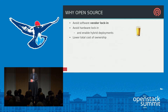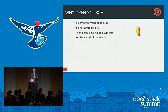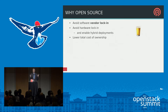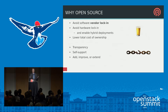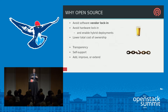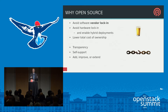Last but not least, Ceph is open source, and that's actually one of the most important features. Open source is important because you can avoid vendor lock-in, get support from Red Hat, SUSE, and half a dozen other providers, and avoid hardware lock-in by choosing your software solution and buying hardware from whichever vendor gives you the best price or reliability. It lowers total cost of ownership. Beyond the free-as-in-beer benefits, there are freedom benefits: transparency to inspect the source code, the option to self-support, and most importantly, the ability to add, extend, fix, and improve the system.